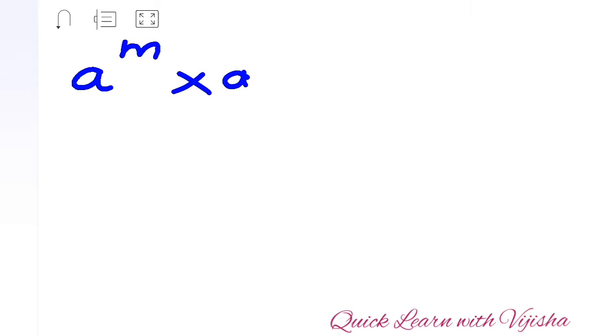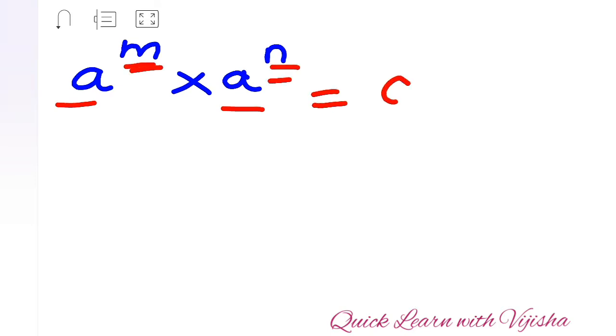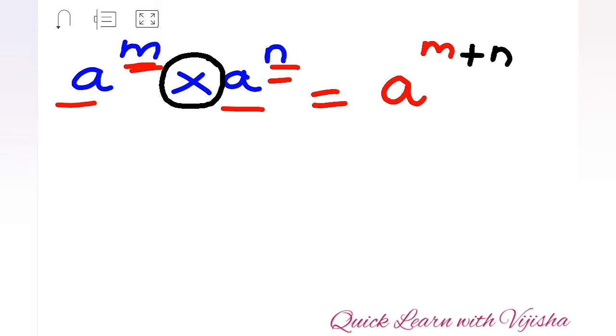Let's start with the first rule. If a raised to m multiplied by a raised to n is given, that means both bases are the same (a) but the indices are different — m and n. So what is the rule? When it is multiplication in the question, you need to add the indices.